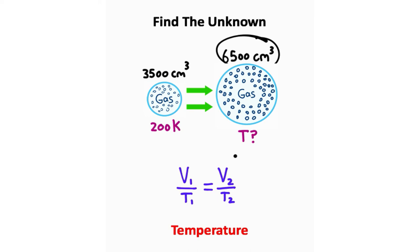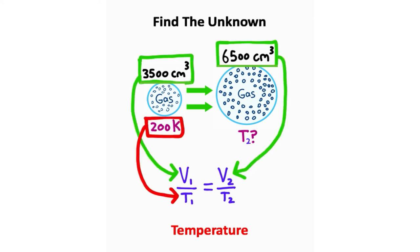Well, if I go ahead and say that this volume is volume 2, I can say this temperature is temperature 2. So I can rewrite this temperature as temperature 2. So now all I need to do is plug in the variables that I have into this bottom equation. And by the way, this bottom equation is called Charles Law.